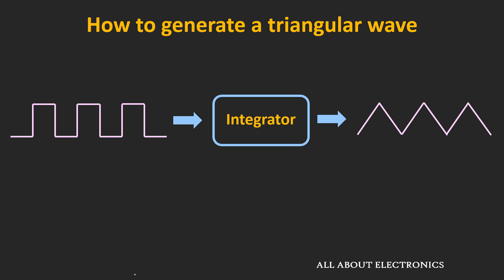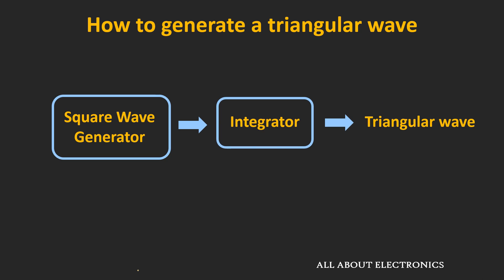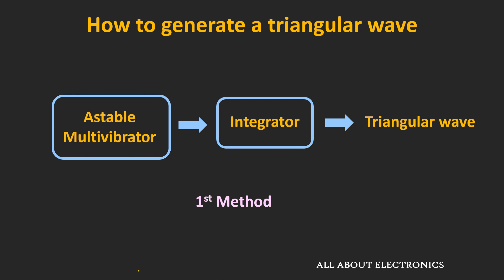Now, if you are aware, in the earlier videos we discussed that if you have a square wave, then using the integrator we can generate this triangular wave. So if you have a readily available square wave from the function generator, then using the integrator circuit we can generate this triangular wave. But if the square wave is not readily available, then we can generate this triangular wave by using two modules: the square wave generator and the integrator circuit.